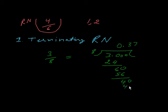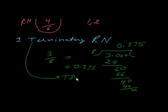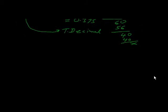We take another 0, and 8 with 5 which is 40, and balance is nothing. So 3 divided by 8 is a terminating rational number. This is a terminating decimal.